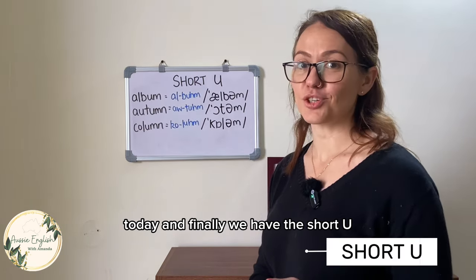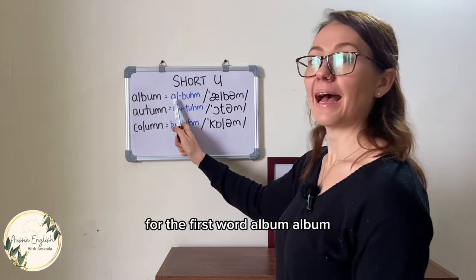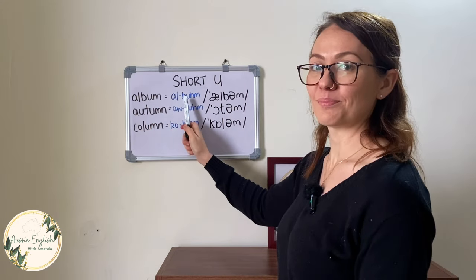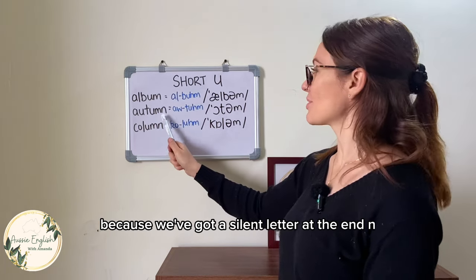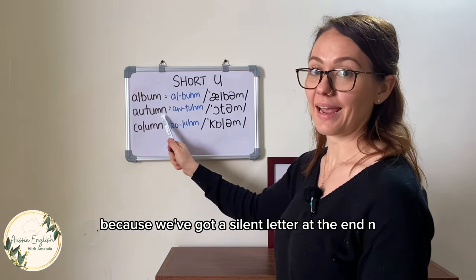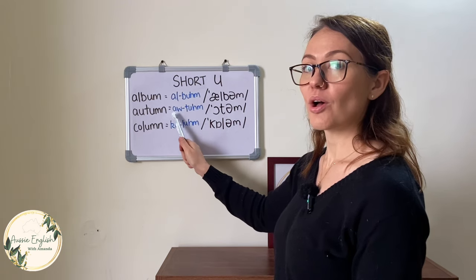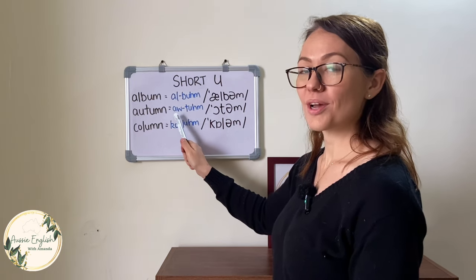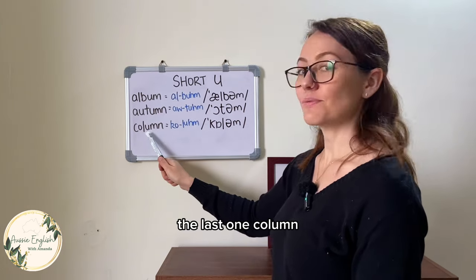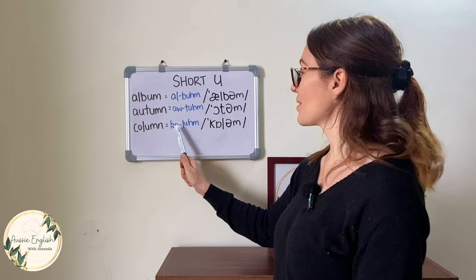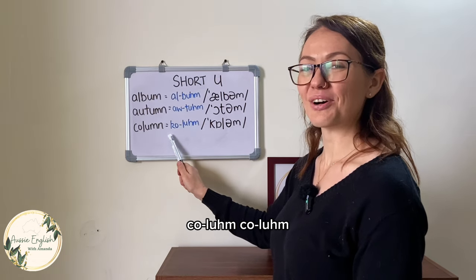And finally we have the short U. For the first word, 'album' — al-bum. The next one is a bit tricky because we've got a silent N at the end, so we just say 'autumn' — au-tum. And the last one is 'column' — col-um.